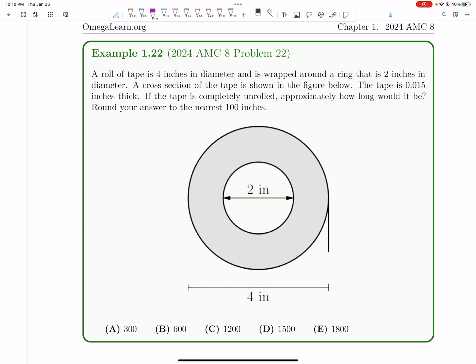Let's now learn how to solve number 22 on the 2024 AMC 8. A roll of tape is 4 inches in diameter and is wrapped around a ring that is 2 inches in diameter.